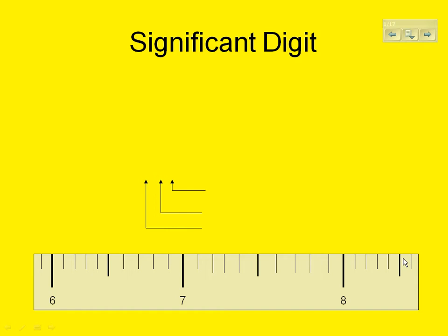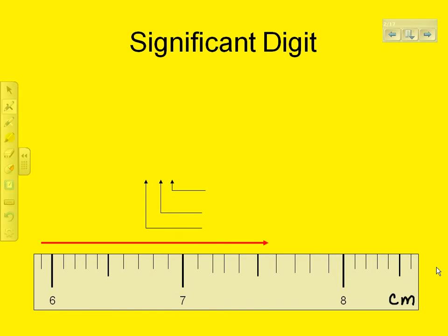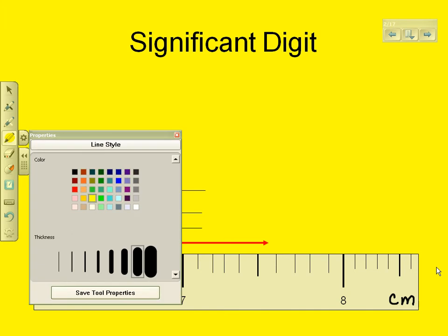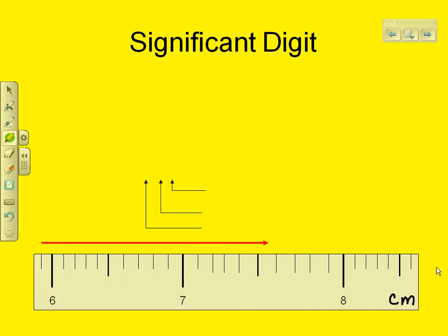Welcome to the Art of Measuring. Let's look at this line that we need to measure. We're using a centimeter ruler. Each of these numbers represents centimeters, so I think we can probably say this line is at least 7 centimeters long.